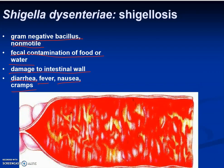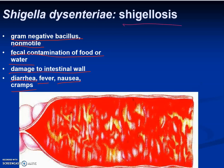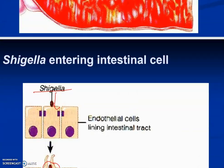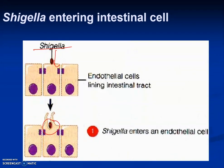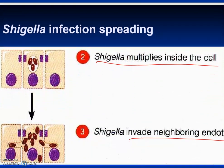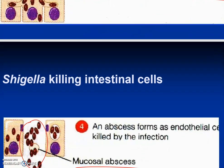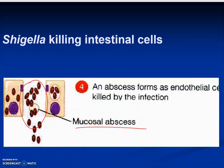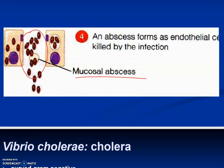Next is Shigella dysenteriae, the cause of shigellosis — a gram-negative bacillus with no motility. It's transmitted through fecal contamination of food or water, causes damage to intestinal walls, and symptoms include diarrhea, fever, nausea, and cramps. Shigella enters intestinal cells, multiplies inside them, then invades neighboring cells, ultimately killing intestinal cells and potentially forming abscesses and ulceration.